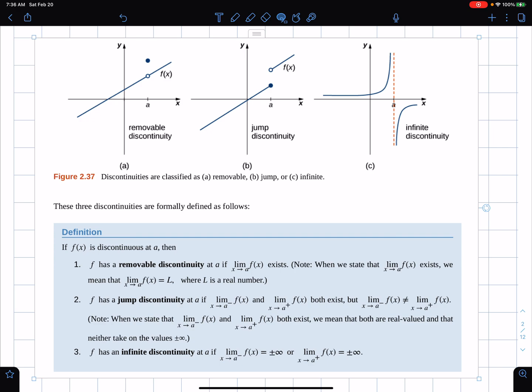A jump discontinuity is the limit does not exist, however, the left-hand limit exists and the right-hand limit exists, they're just not equal to each other. And we can see the jump. Infinite discontinuity is where the limit from the left is equal to plus or minus infinity, from the right, infinity or negative infinity. There's a vertical asymptote at this infinite discontinuity.